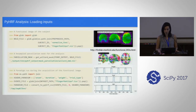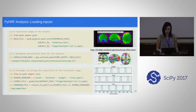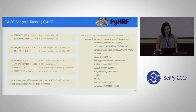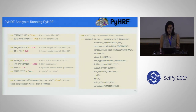We do the loading of the inputs: the BOLD volume, the parcellation — making sure it's aligned with our 4D volume — and also the experimental paradigm. Before running pyHRF, we need to set some parameters.